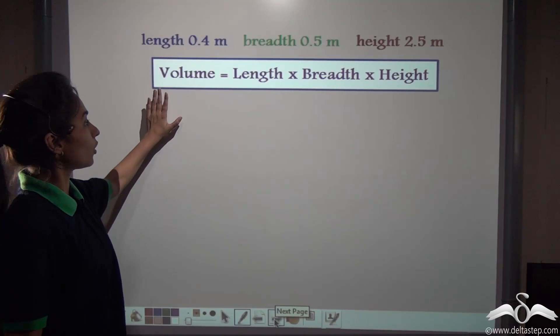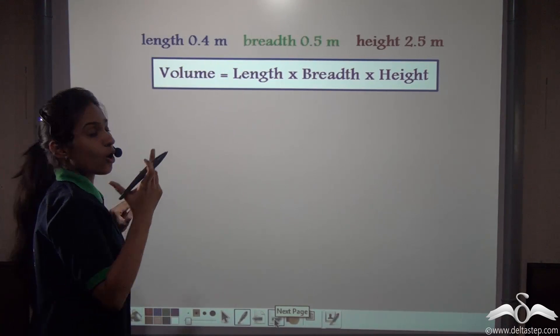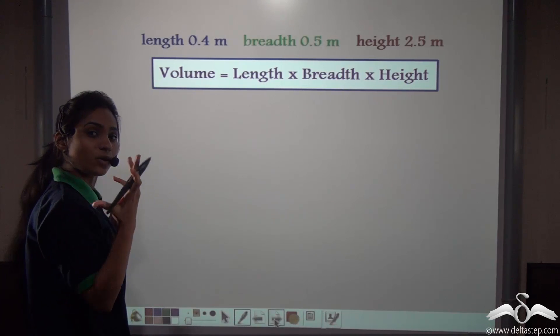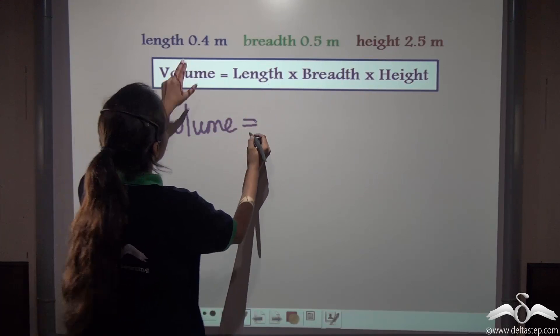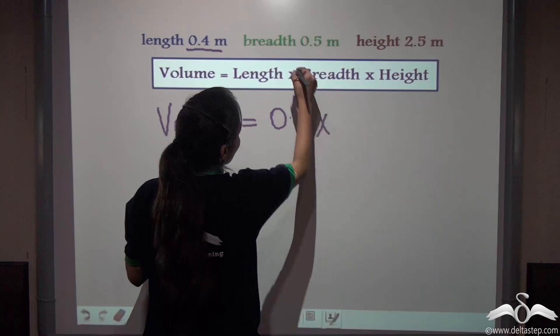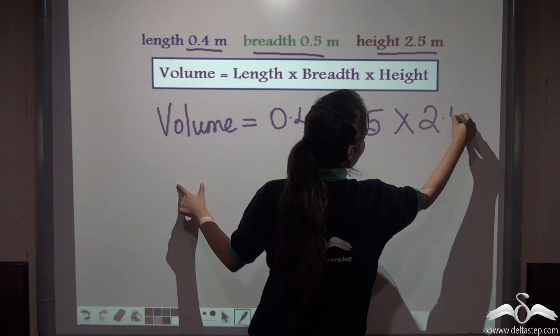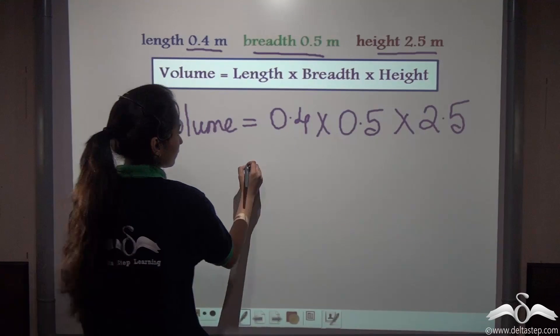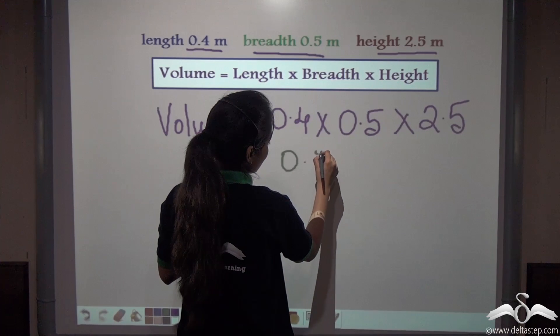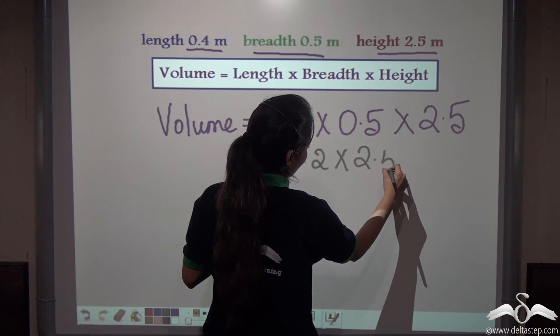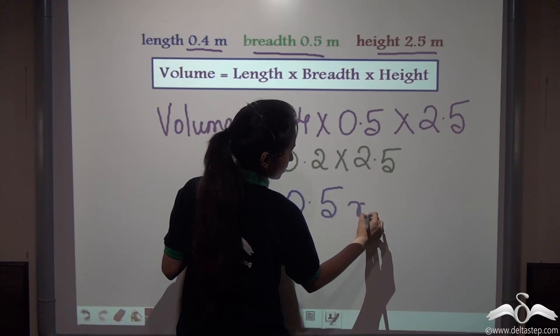So now you know how we got this formula as the volume length into breadth into height. The length and breadth and the height of the refrigerator is given to us. Let's find out the volume. So the volume is length 0.4 into breadth 0.5 into height that is 2.5. Now 0.4 into 0.5 gives us 0.2 into 2.5 which gives us 0.5 meter cube.